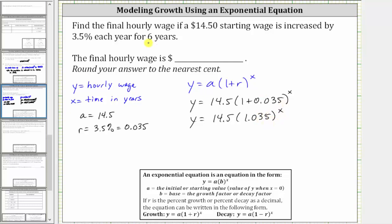And now to determine the final hourly wage six years later, we set x equal to six. So if we set x equal to six and perform substitution, we have y equals 14.5 times 1.035 raised to the power of six.